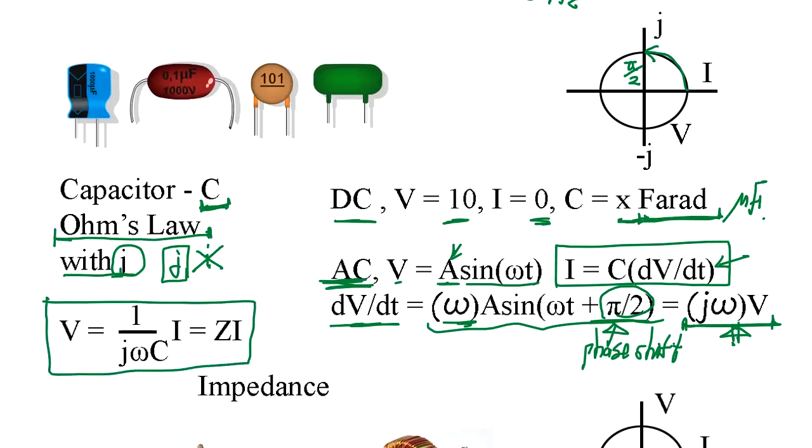V equals 1 over j omega C times I. Well, imagine what? Voltage is an imaginary number? Well, it's j signify the phase shift in the complex plane. That's what it is. When you divide by j, it goes here, other way around.